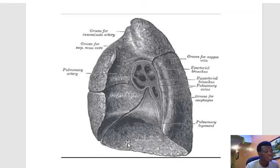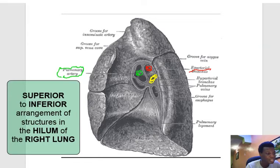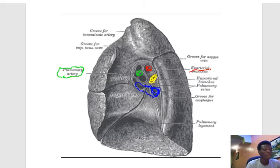Here is a picture — what lung is this? Looking at the fissures, of course this is the right lung; it has two fissures. The first structure at the hilum is the eparterial bronchus, then the pulmonary artery, then the hyparterial bronchus, and then lastly the pulmonary veins, which are the most inferior. Don't forget: from top to bottom it is eparterial bronchus, pulmonary artery, hyparterial bronchus, and pulmonary veins. Take note of the first — the bronchus — and the last — the pulmonary vein.